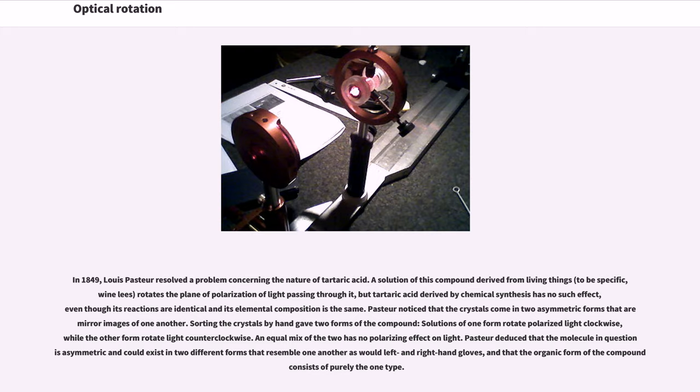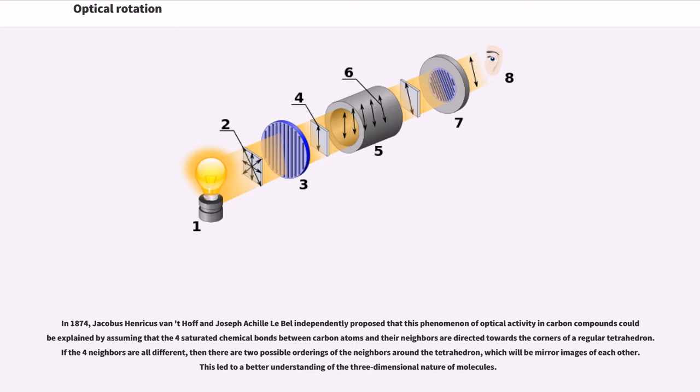Pasteur deduced that the molecule in question is asymmetric and could exist in two different forms that resemble one another as with left and right hand gloves, and that the organic form of the compound consists of purely the one type. In 1874, Jacobus Henricus van't Hoff and Josef Achille Le Bel independently proposed that this phenomenon of optical activity in carbon compounds could be explained by assuming that the four saturated chemical bonds between carbon atoms and their neighbors are directed towards the corners of a regular tetrahedron. If the four neighbors are all different, then there are two possible orderings of the neighbors around the tetrahedron, which will be mirror images of each other. This led to a better understanding of the three-dimensional nature of molecules.